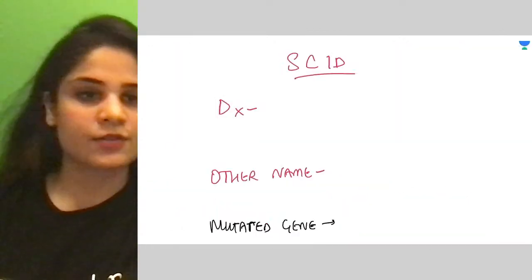Let me discuss the diagnosis and other name of SCID. The other name of the disease is 'bubble baby disease' or 'bubble boy disease.' A person with SCID is so prone to infections that they need to be kept in a bubble — similar to bio-bubbles created for IPL teams to prevent COVID. Patients with SCID have to live in a bio-bubble their entire life to protect them from recurrent infections.